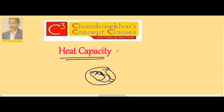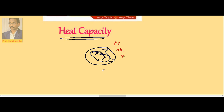I want to raise the temperature of this substance through 1 degree centigrade or 1 Kelvin, because on either the centigrade scale or the Kelvin scale the difference in temperature is the same. Let us say Q is the heat required to raise the temperature of this substance through 1 degree centigrade or 1 Kelvin. That is what we call heat capacity.